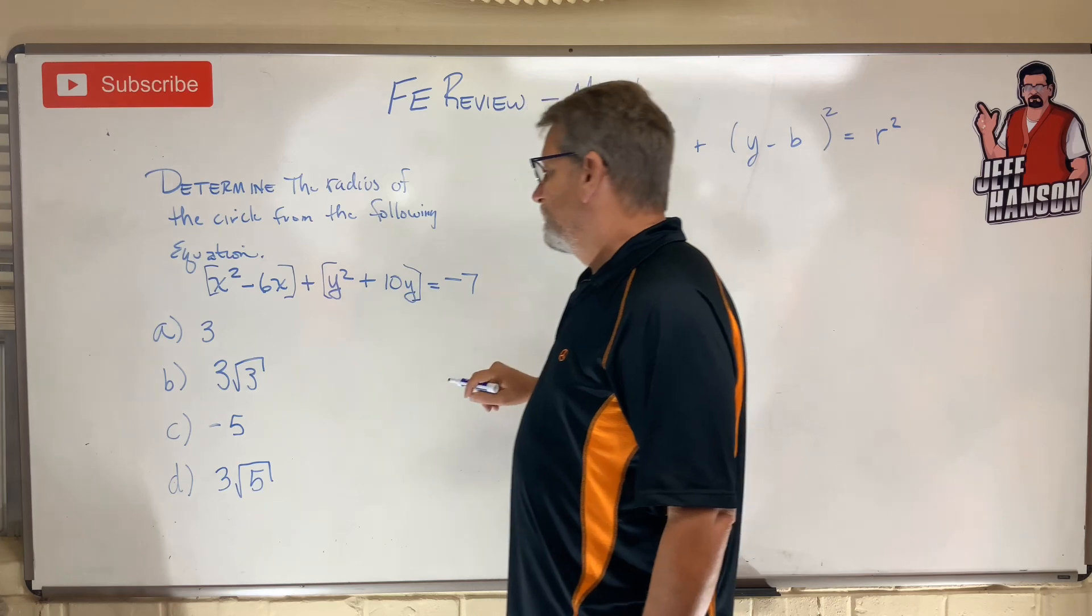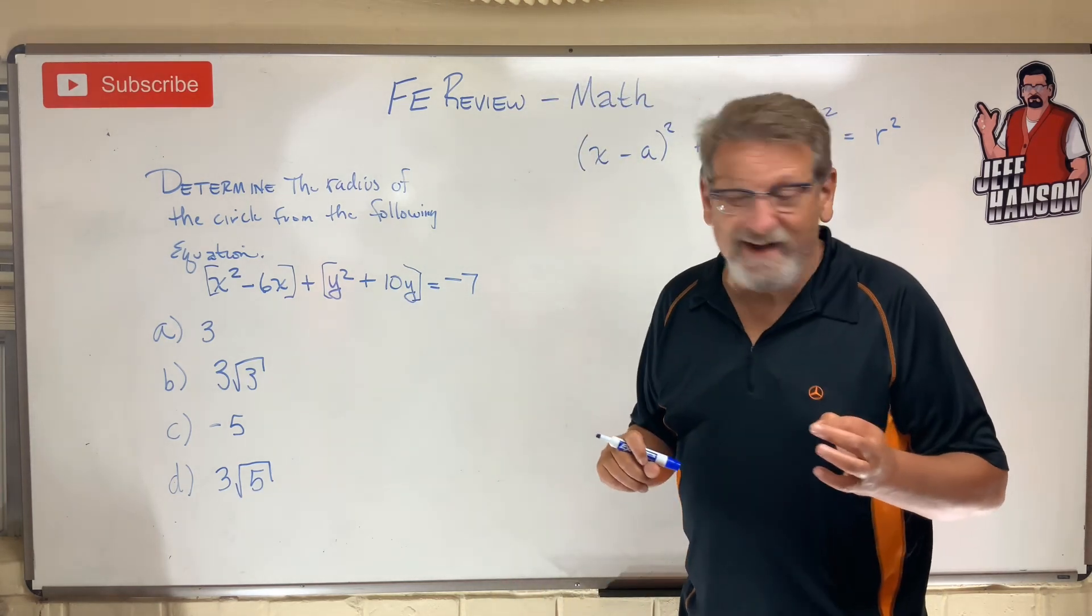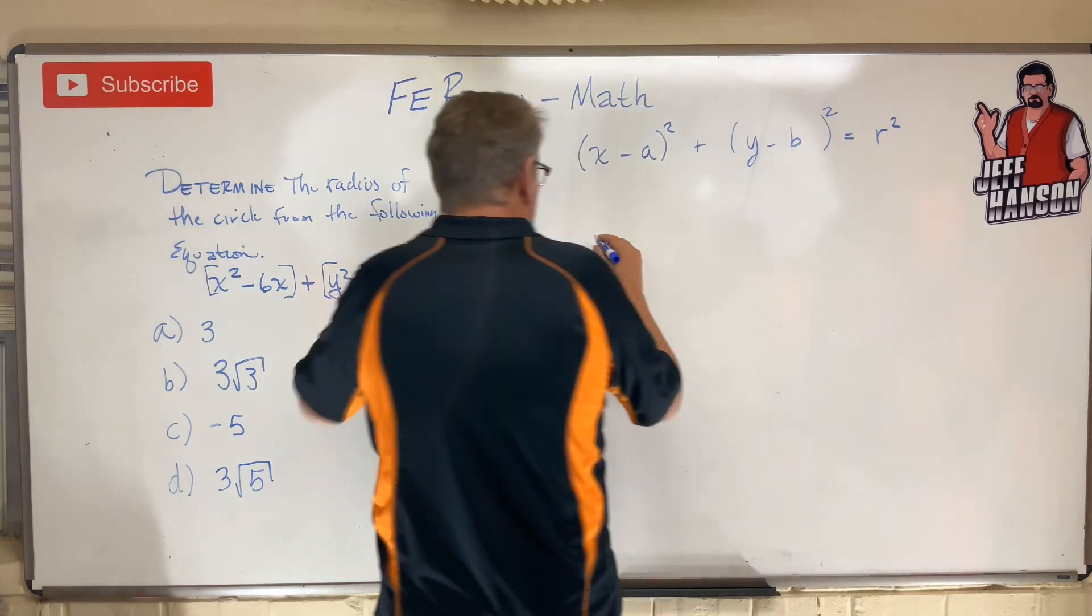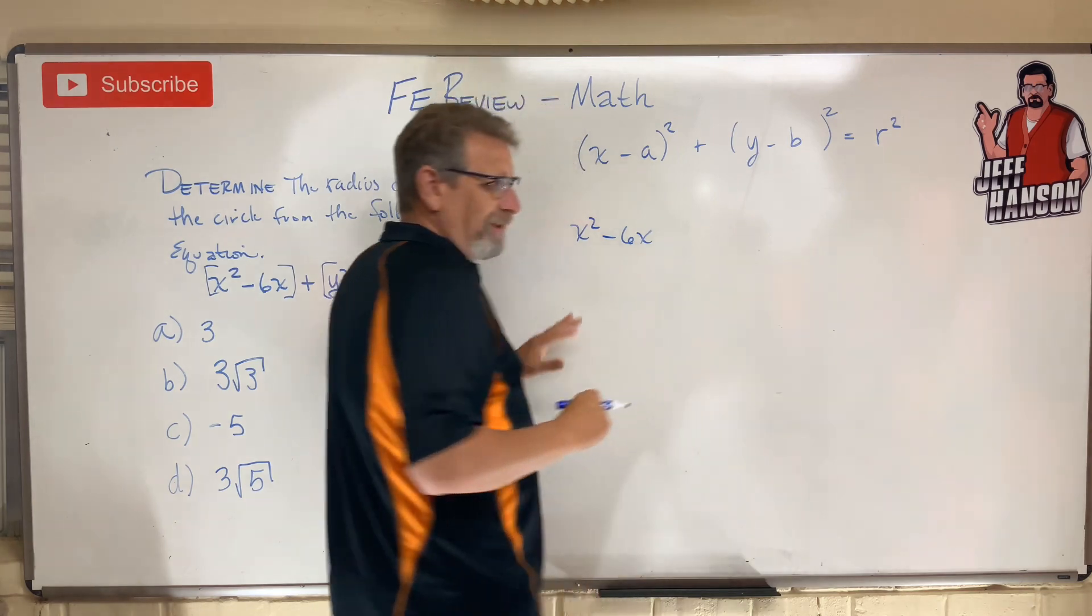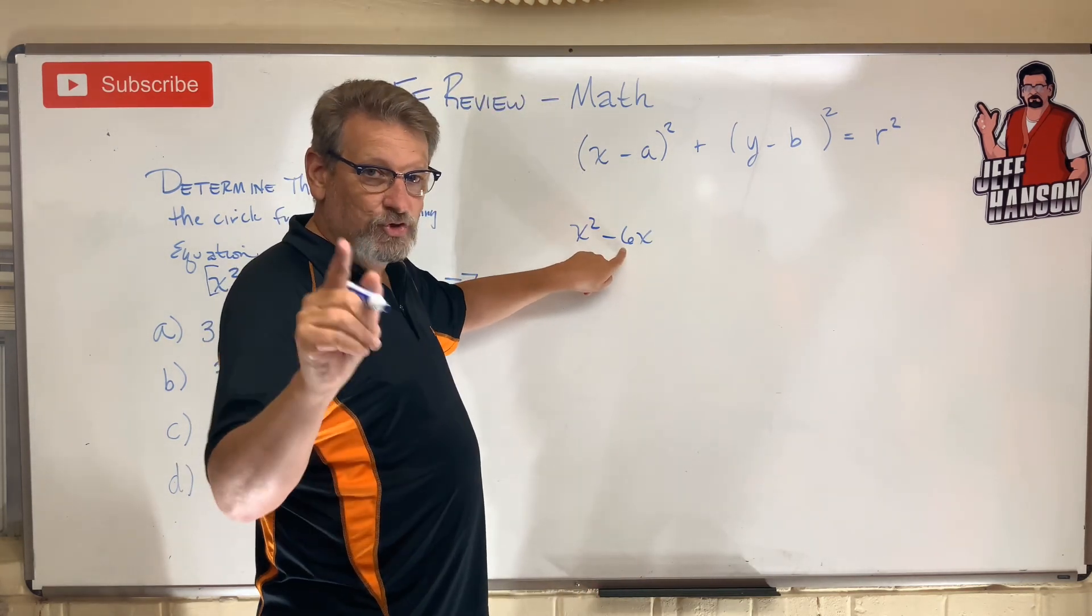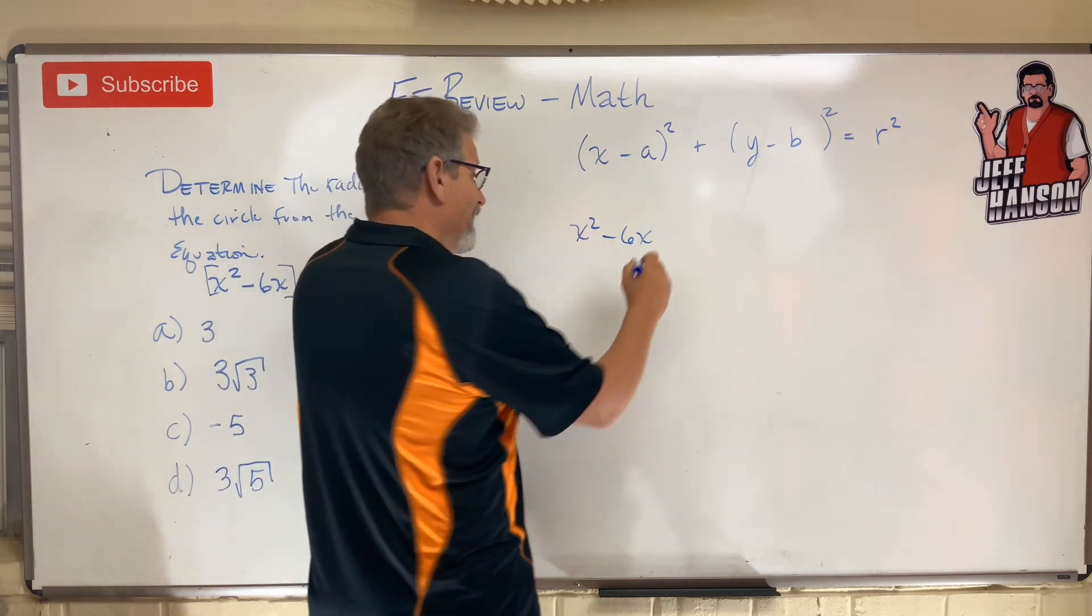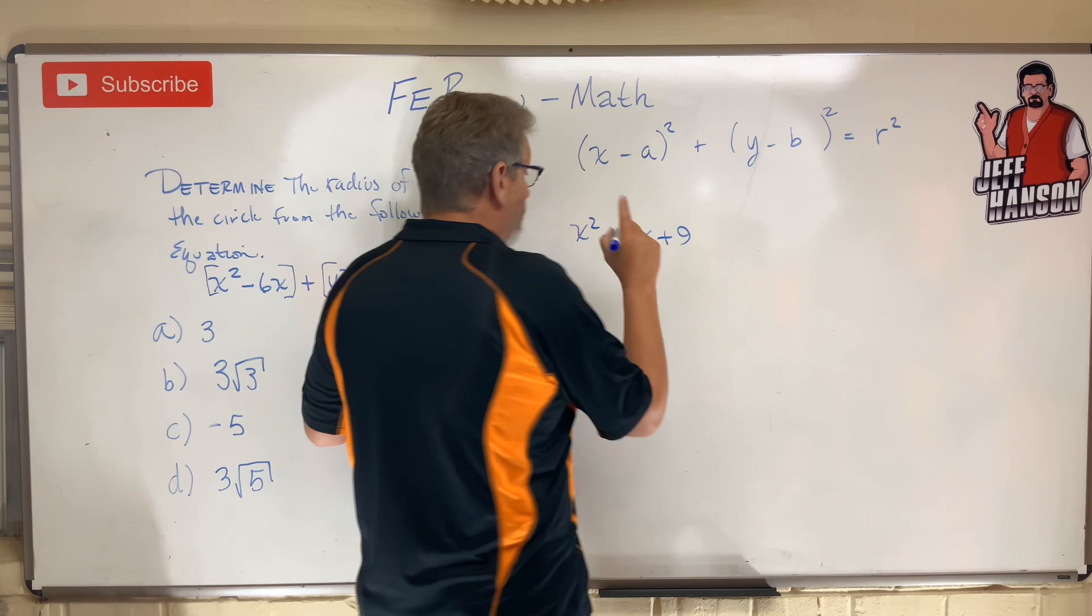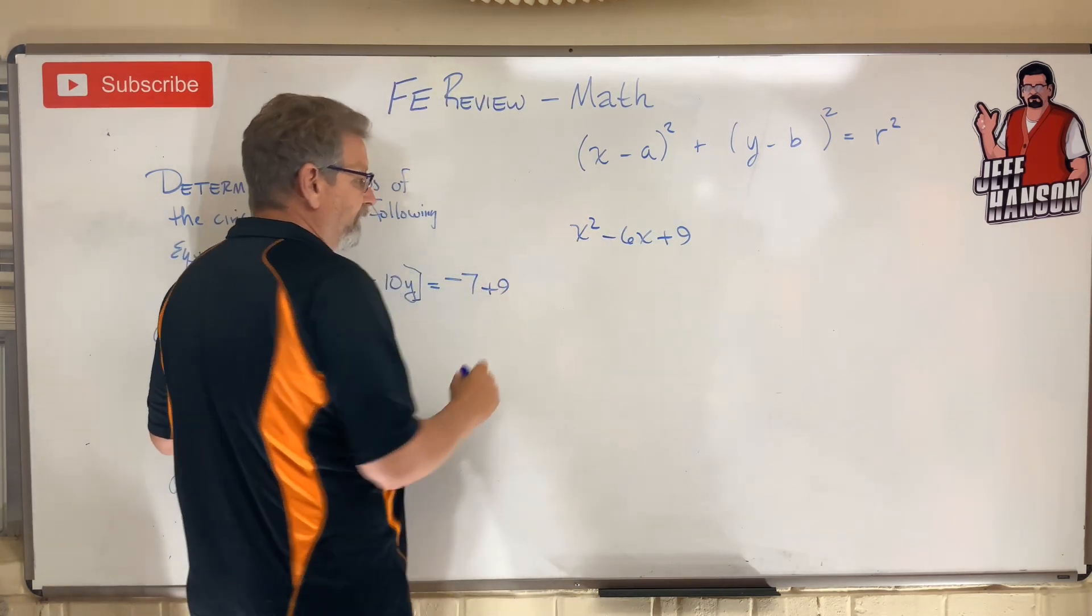What you have to do is if you remember how to complete the square. So we get x² - 6x, and to complete that square, you divide this in half and you square it. So divide that in half, that's 3, squared is 9, so plus 9. Now remember, if I have a plus 9 over here, I got to have a plus 9 over there, don't I?